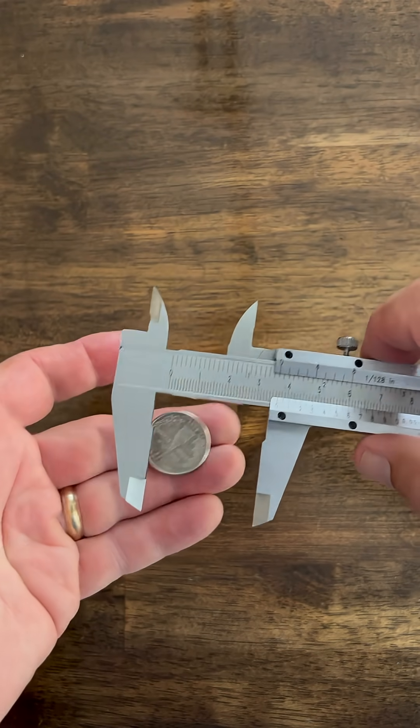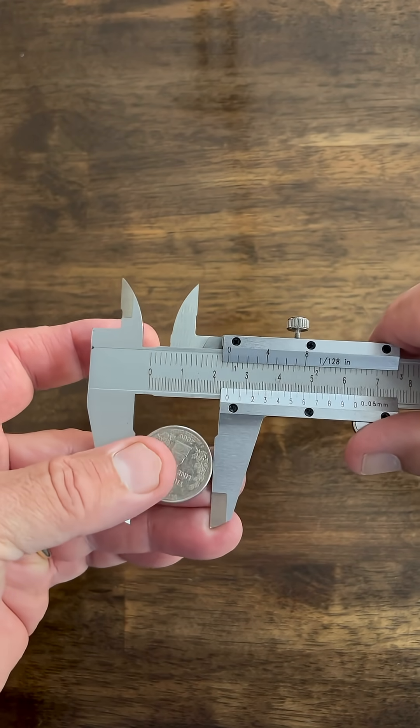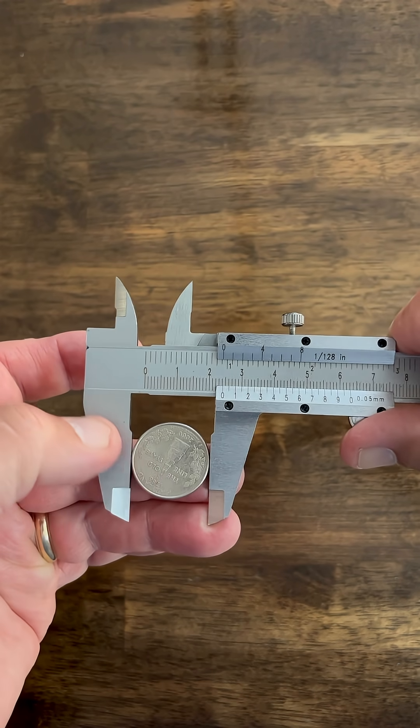So first of all, I'm going to put the quarter in the jaws of the caliper here and get it nice and parallel as I can, or perpendicular.